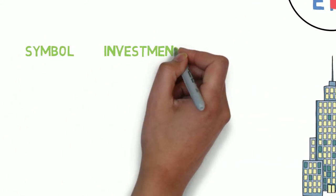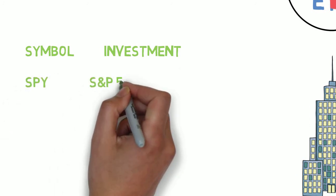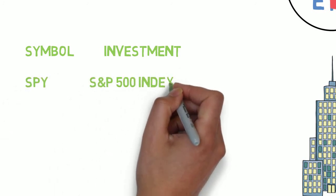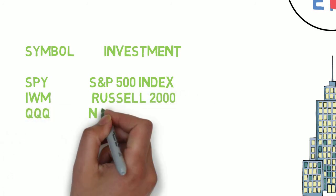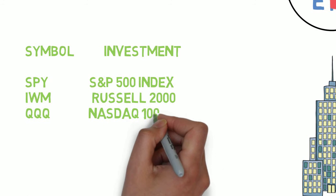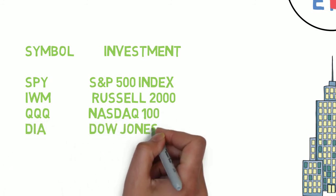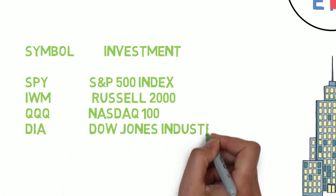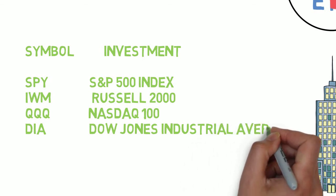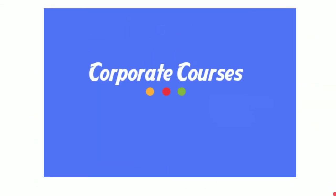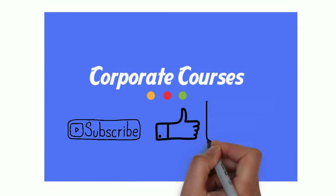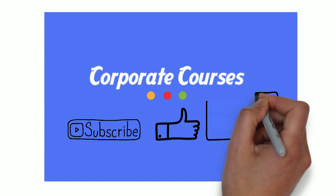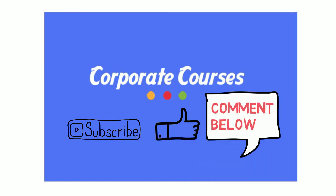To finish off this video, here are some different ETF investments to look at: SPY for the S&P 500 index, the Russell 2000 index, the NASDAQ, or the Dow Jones Industrial Average. If you like this video, go ahead and comment, rate, or subscribe, and let me know in the comment section what kind of videos you'd like to learn about or see on this channel. Thanks for watching.